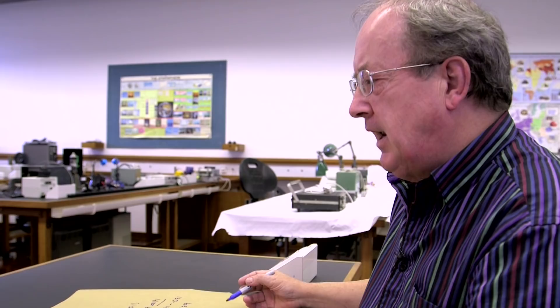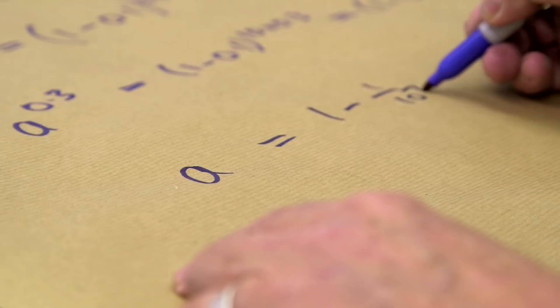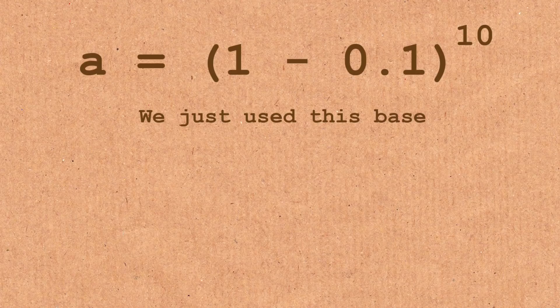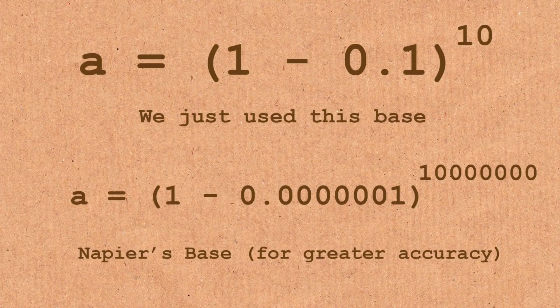Now Napier used the number 1 minus 1 over 10 to the 7 to the power of 10 to the 7. That was his base. That was the one he used over a long period to get as accurately as possible. So he was using this process but with a more complicated number.